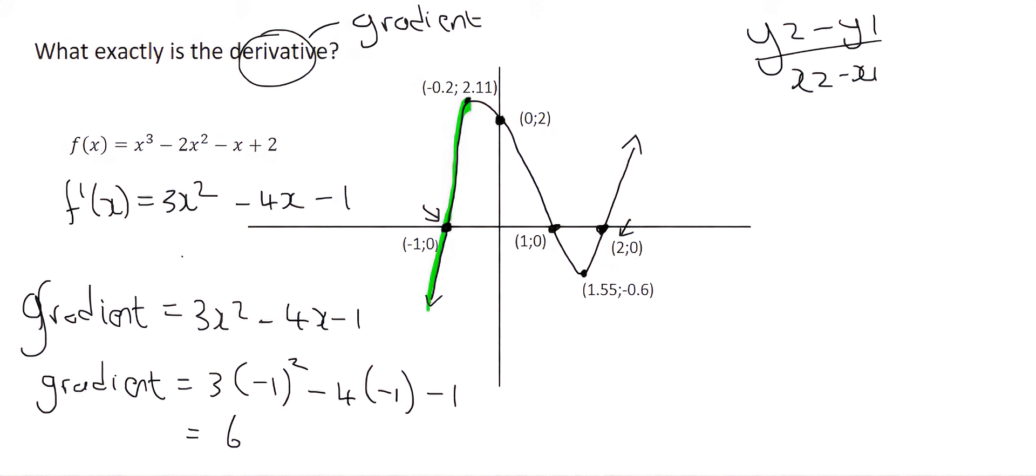Let's choose somewhere, let's choose over here. So that x value would probably be about negative 1 half. So we could substitute it in, and we'd get 3 times negative 1 half squared, minus 4 times negative 1 half, minus 1. And that gives you a value of 1.75. So it means that the gradient over there is still positive, but it's a little less steep than what it was when x was minus 1.